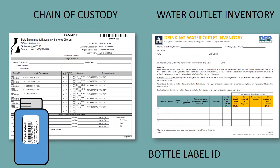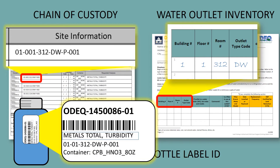These completed sections are based on the data you provided in your water outlet inventory form. This information establishes the chain of custody site information, which is your sample location.